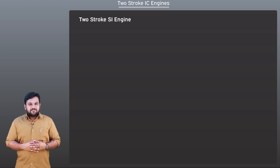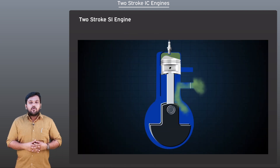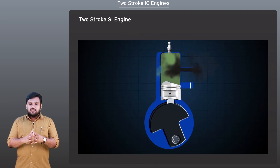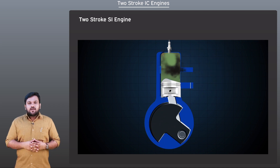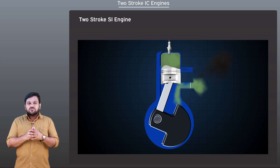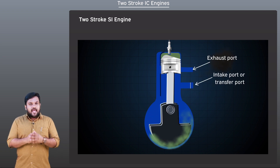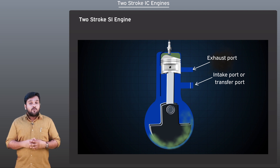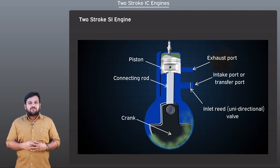The name 2-stroke SI engine comes from the fact that there are only 2 strokes required for the engine to complete one cycle and produce power. In the diagram shown, we can see that a typical 2-stroke engine consists of an exhaust port, an intake port or transfer port, the piston, connecting rod, an inlet reed valve, and a crank connected to the crankshaft.